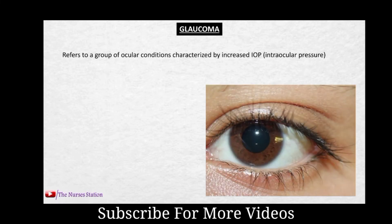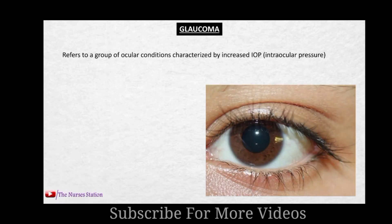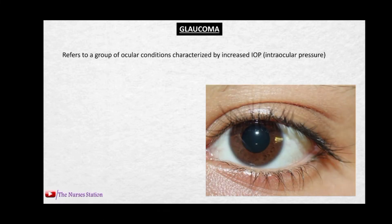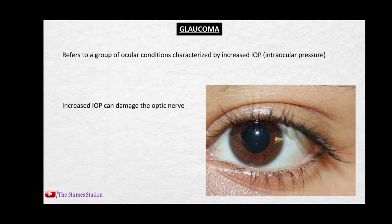Glaucoma is a group of ocular conditions characterized by increased IOP, or intraocular pressure. The IOP is the pressure put against the eyeball by the fluids present in it. Due to this increased intraocular pressure, there can be damage to the optic nerve which can compromise the patient's vision and can make the patient blind if not treated timely.